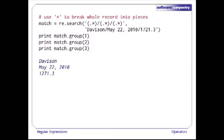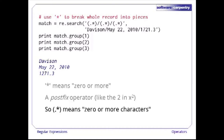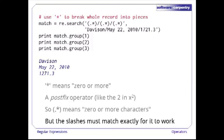Our first attempt to parse this data relies on the star operator. Star means zero or more repetitions of the pattern that comes before it — it is a postfix operator. So dot-star means zero or more characters. In order for the entire pattern to match, the slashes have to line up exactly because slash matches against itself. And that is why this seems to grab the site name, the date, and the reading correctly.